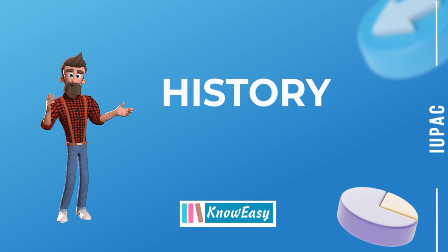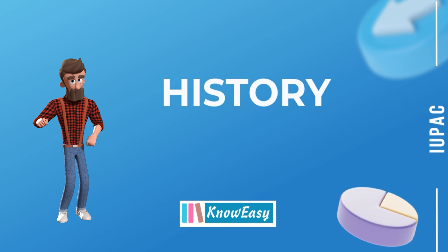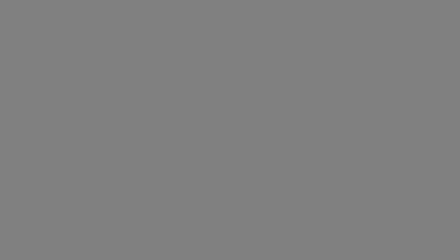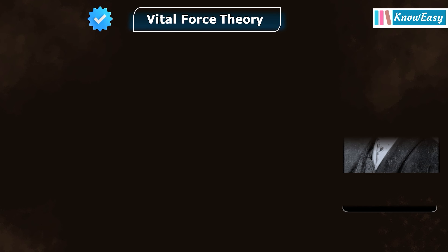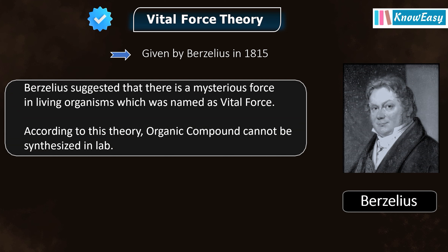Let's have a look at the history of organic chemistry. This is the story of the 18th century, when scientists believed in the vitalism concept. Let's understand vital force theory. It was given by Berzelius in 1815. He suggested that there is a mysterious force in living organisms, which was named as vital force. According to this theory, organic compounds cannot be synthesized in the lab.